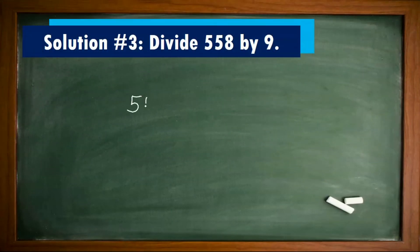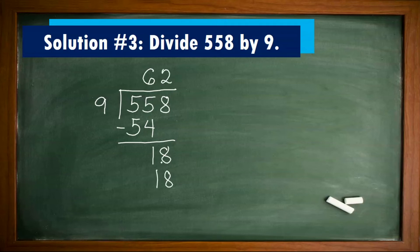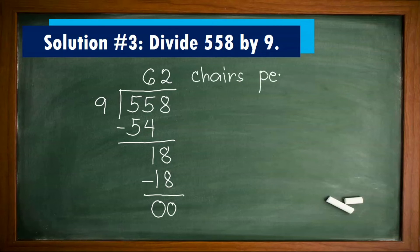Solution number 3: Divide 558 by 9. 55 divided by 9 equals 6; 6 times 9 is 54; 55 minus 54 equals 1. Bring down 8: 18 divided by 9 is 2; 2 times 9 equals 18; 18 minus 18 equals 0. Therefore, the chairs can be arranged into 9 rows — 62 chairs per row.